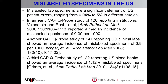Every laboratory has mislabeled specimens. At ARUP, the average rate in our specimen processing department is one mislabeled specimen per 8,000 specimens processed. This is much lower than the one per 1,000 or 2,000 that has been published based on CAP surveys. Nevertheless, we felt it important to detect and prevent every mislabeled specimen, if possible.